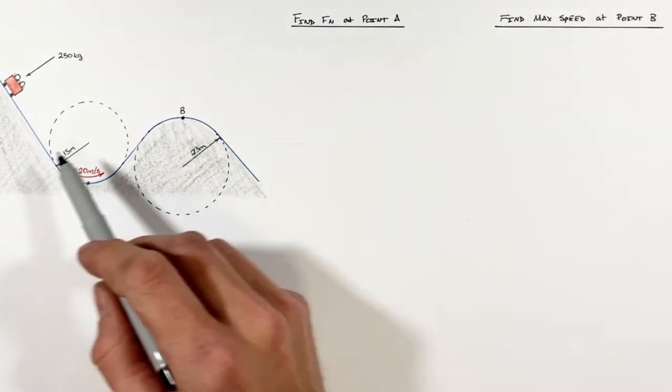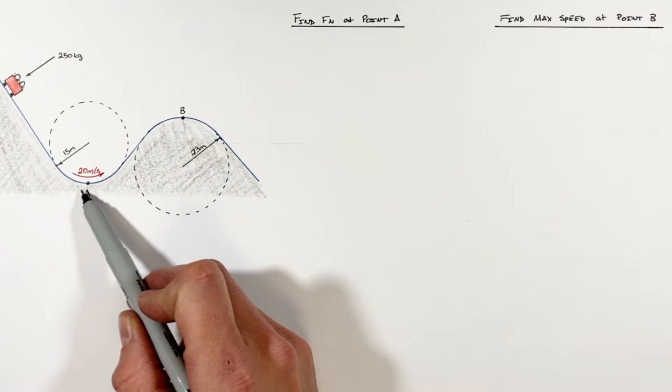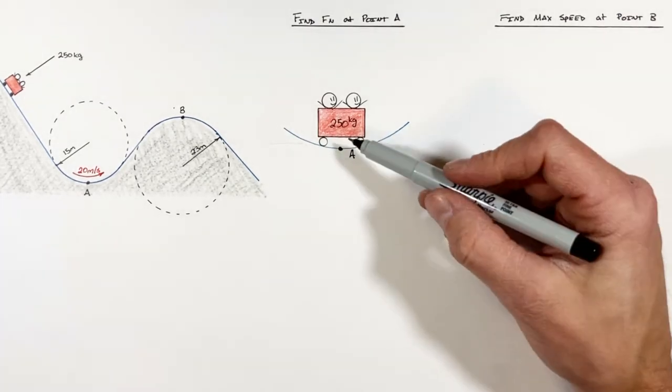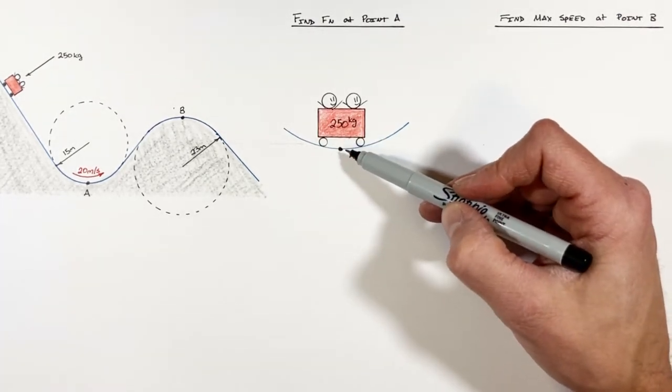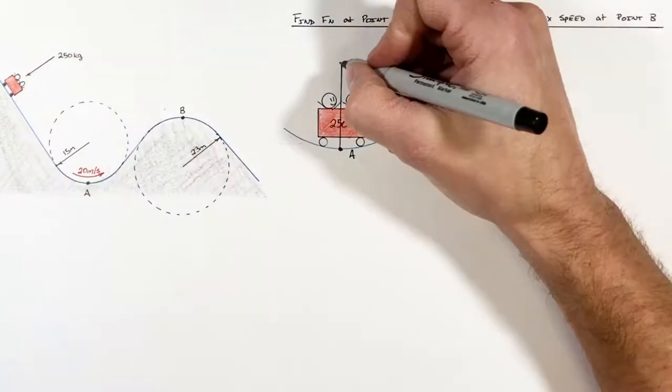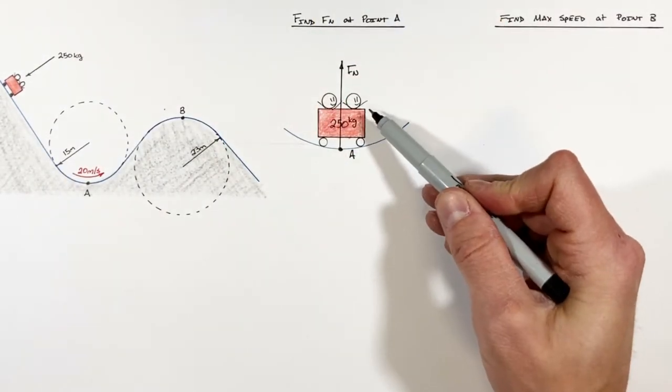The first thing we're going to do is draw a free body diagram of this cart as it passes point A. So as the cart travels through point A, of course there's going to be a normal force acting upward on the cart. And it's that normal force which we're trying to solve for.